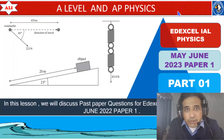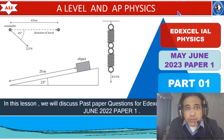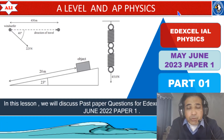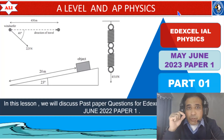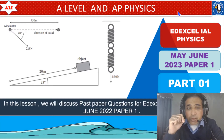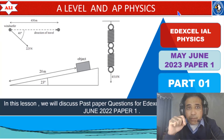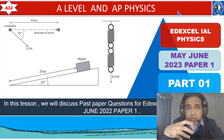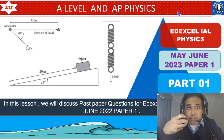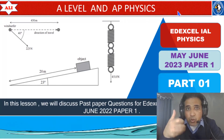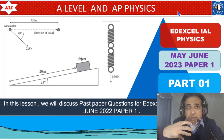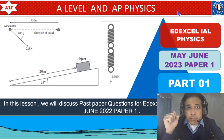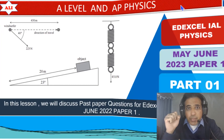Welcome to A-level and AP Physics. In today's lesson we will discuss past paper questions from the June 2020 theory paper one. Our main focus will be on section one and we will try to cover all questions in detail, so you can improve your conceptual understanding of unit one. Let's study together, let's improve together.